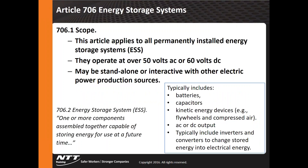Article 706 covers energy storage systems — how are we going to store the energy pulled off solar systems, wind systems, and other sources? The article addresses the actual storage itself and is not limited to any particular type. It can be batteries, capacitors, kinetic devices such as flywheels, compressed air, or water storage. This is the energy of the future, and this article works to ensure safety requirements are met.